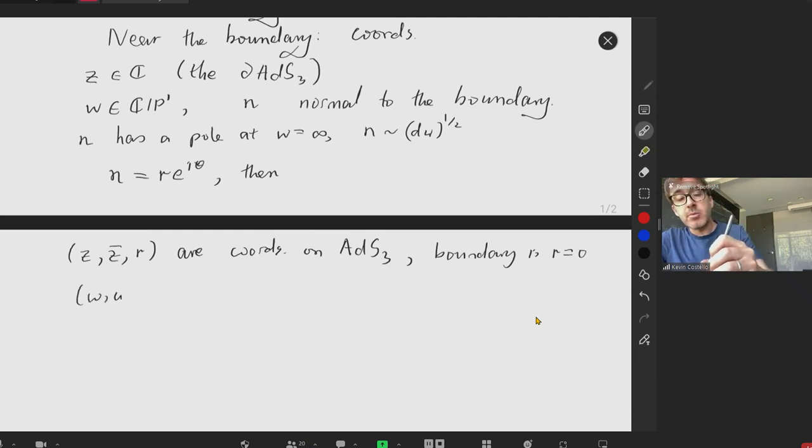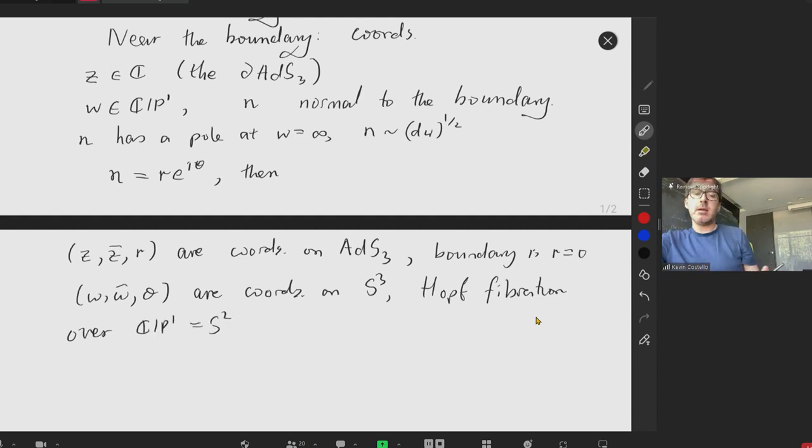W, W bar, and theta are coordinates on the three sphere, which we're seeing as a Hopf fibration over CP1. The theta coordinate parameterizes the Hopf fiber.